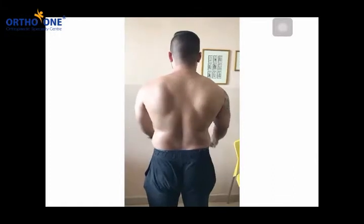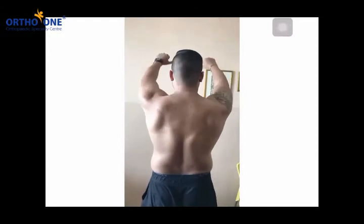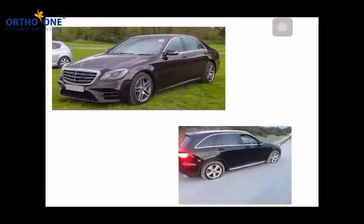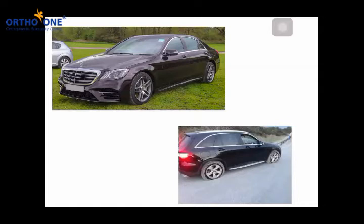Even a gym bodybuilder with good physique can have protruding scapula — also called scapular dyskinesis — which is the main reason for shoulder pain. To explain how this causes pain: when a car has to move smoothly, the tire has to be properly inflated. If the tire is punctured, the car starts wobbling. Similarly, the shoulder joint is like the car and the scapula is the tire. If the scapula is not moving normally, all stress is transmitted to the shoulder and the entire function is compensated, causing severe shoulder pain.